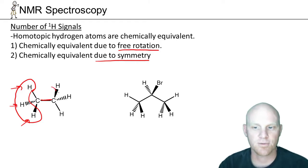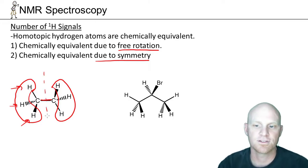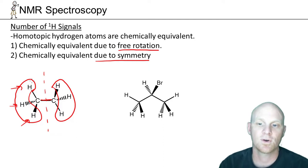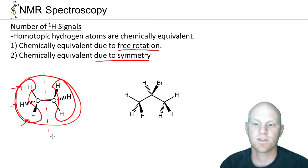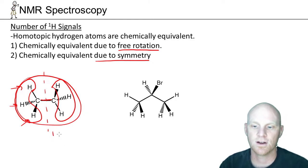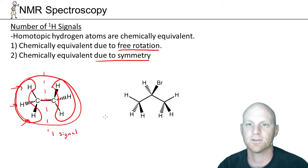The same applies to the three hydrogens on the other side of the molecule — they're all equivalent due to free rotation. But we can take this a step further: there's also symmetry in this molecule, where the left-hand side is exactly the same as the right-hand side. So it turns out that all six hydrogens are chemically equivalent, and in the H NMR spectrum for ethane, we'd only expect a single signal.